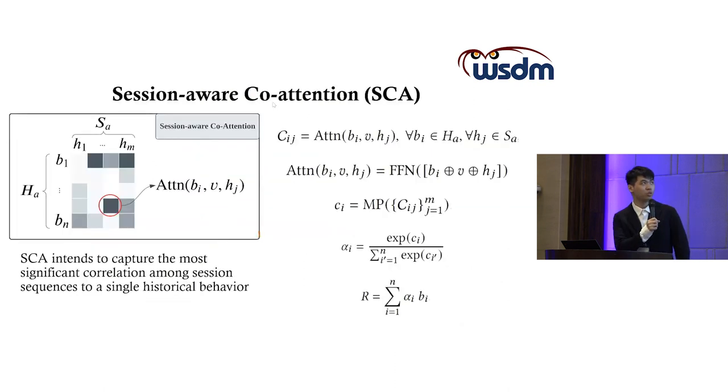Let's talk about session-aware co-attention first. Unlike traditional attention, session-aware co-attention intends to capture the most significant correlation among session sequences to a single historical behavior. We first calculate all the scores of the session sequences and historical behaviors, then we choose a maximum score of a session sequence to one single historical behavior. It means that if a historical behavior is strongly correlated to any of the behaviors in the session sequence, then the historical behavior is useful because it contains current users' interests. In this way, we can use session-aware co-attention to distinguish historical behaviors and choose some behaviors that contain user interests.